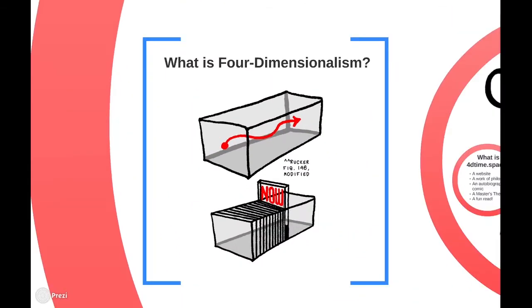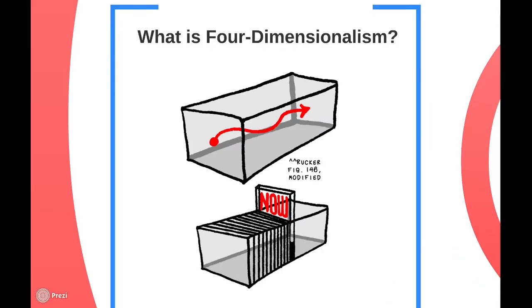You might be wondering, what is four-dimensionalism? In four-dimensionalism, which is also known as block universe theory, which I use interchangeably throughout, we think of the universe as a four-dimensional block of space-time. Many and all events, past, present, and future, and all matter exist in one unmoving four-dimensional chunk, which you can see in the top part of that image. On the bottom, you can see that the now is really just a single slice of time in the block universe, and that every moment can be sliced up, but technically, it's all a part of the same block.